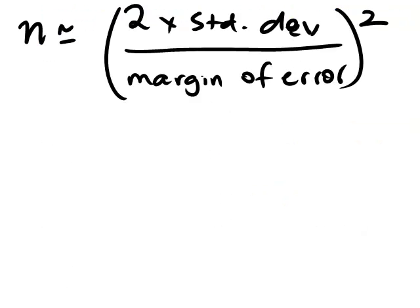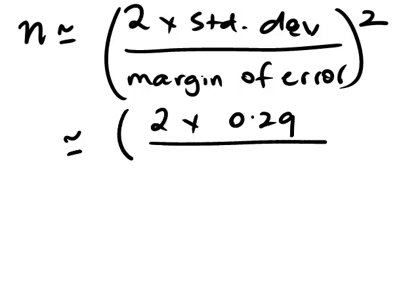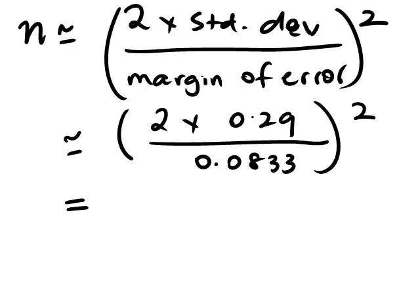So with this information, we can work out the sample size. It will be approximately 2 times the standard deviation divided by the margin of error, all squared. We can plug all of that into our calculator, not forgetting to do the squaring, and we get 48.44.